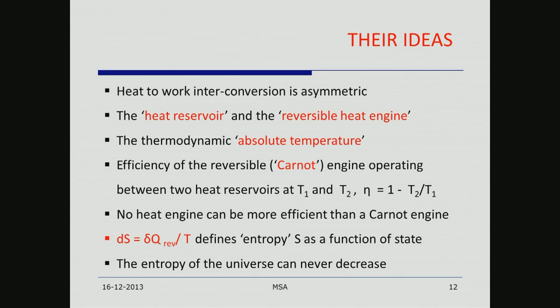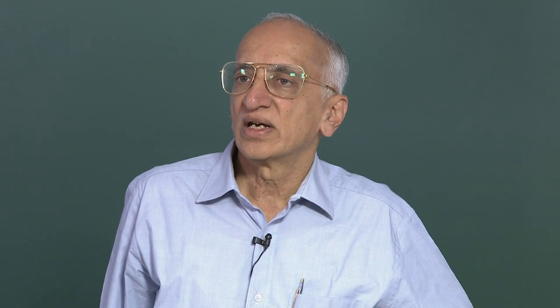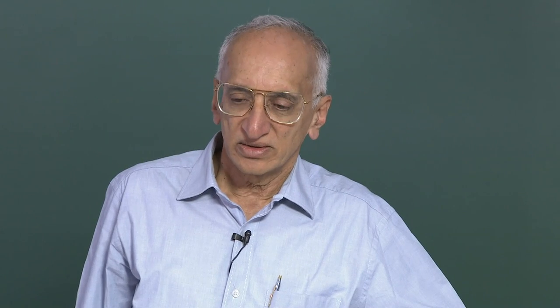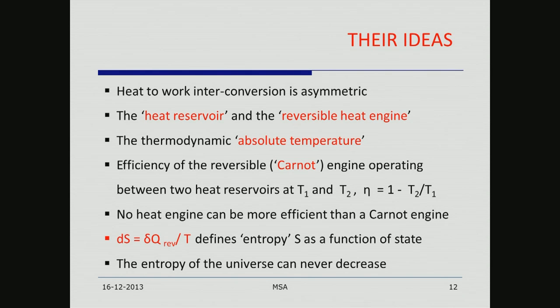Heat-to-work conversion, Carnot pointed out, is asymmetric, and he introduced the concept of a heat reservoir — a reservoir so large that adding or removing a little heat does not change its thermodynamic state. He introduced the concept of a reversible heat engine and realized that to produce work you have to have a cyclic operation. He introduced the concept of a heat engine that would work both ways, and the thermodynamic concept of absolute temperature came from Carnot. He talked about the efficiency of the Carnot engine operating between two heat reservoirs at T1 and T2, saying efficiency must be 1 − T2/T1, and that no heat engine can be more efficient than the Carnot engine.